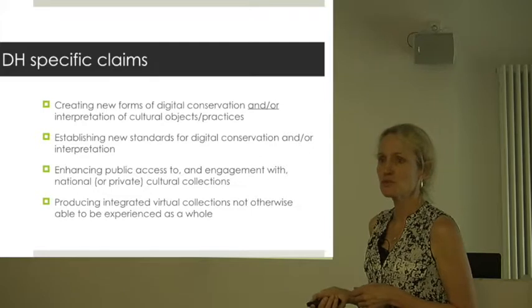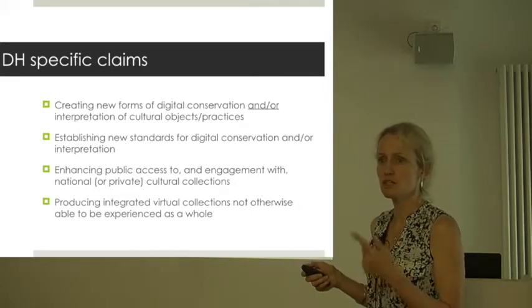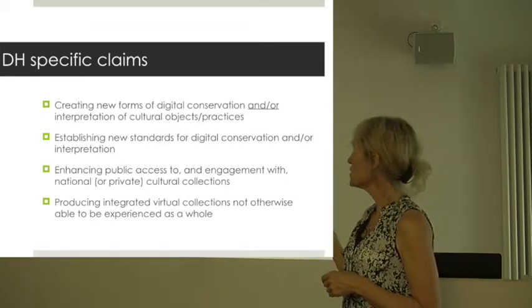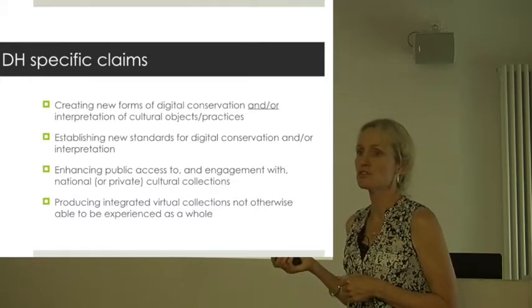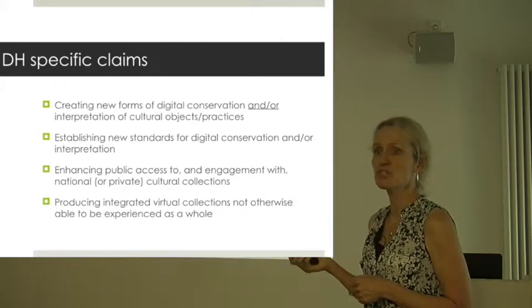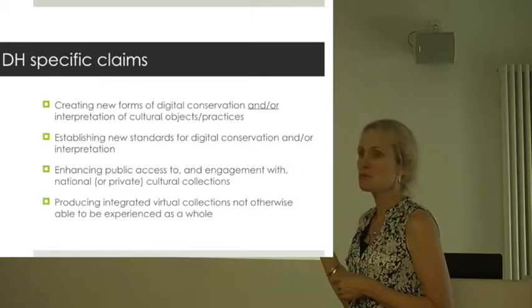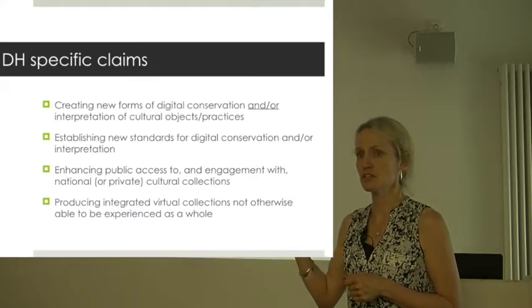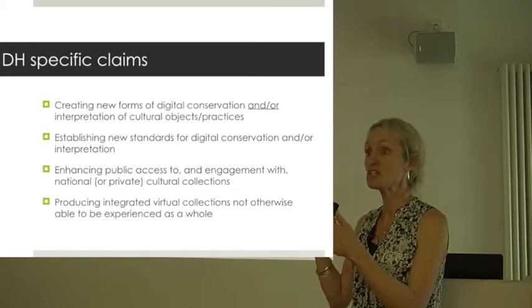And then these are the ones I've drawn up for digital humanities specifically — I'm very happy to make these slides available through Juliana if they're any use. Creating new forms of digital conservation and interpretation of cultural objects and practices. Establishing new standards — this turned out to be immensely helpful. The feedback loop by which you are actually enhancing the process of digitisation and the standards to which it aspires was really important. So in what ways is the process of digitising, in this case Jane Austen manuscripts, assisting standards of the technology itself?